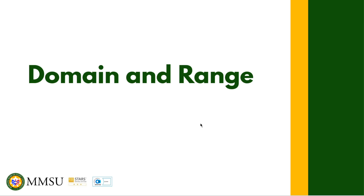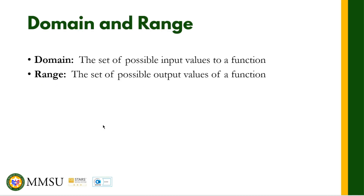Before we do that, let us have a simple definition of domain and range. The domain of a function is the set of possible input values to a function — these are the values we can input to a function. The range, on the other hand, is the set of all possible output values of a function.